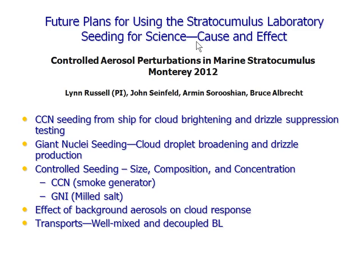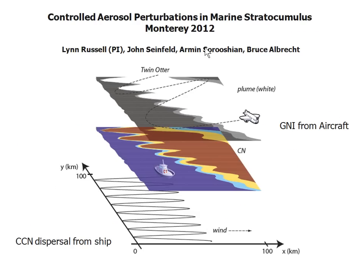We call this 'seeding for science.' The key issue is cause and effect — it's so difficult using satellite data or going out in the field to establish cause and effect. The idea here is to produce a source and better understand that relationship. The dispersal will be from a ship off the coast, doing a pattern like this. The Twin Otter will be the aircraft used, and from the aircraft itself we also have a way of dispersing giant nuclei.